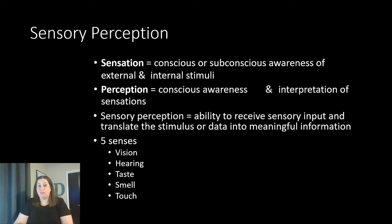Sensory perception is the ability to receive that sensory input — you're able to collect it — but then you're also able to translate that stimulus or data into meaningful information in the brain. It allows you to make a decision and do something with that information. We have five main senses: vision, hearing, taste, smell, and touch.